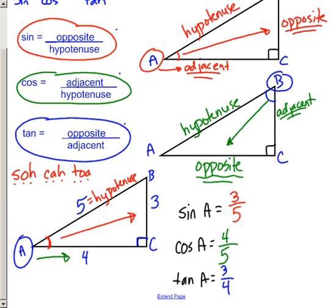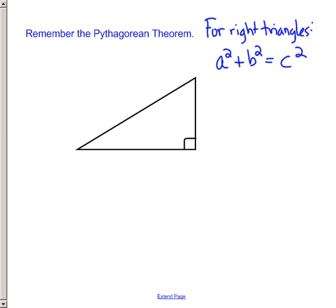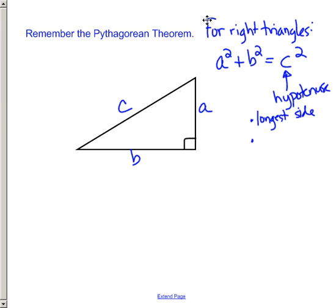One thing you sometimes need when working with right triangles is something you've seen before: the Pythagorean theorem, which applies to right triangles only. It tells us that for any right triangle, a squared plus b squared equals c squared, where a and b are the lengths of the two legs and c must be the hypotenuse — the longest side. The hypotenuse is always the side opposite the right angle.